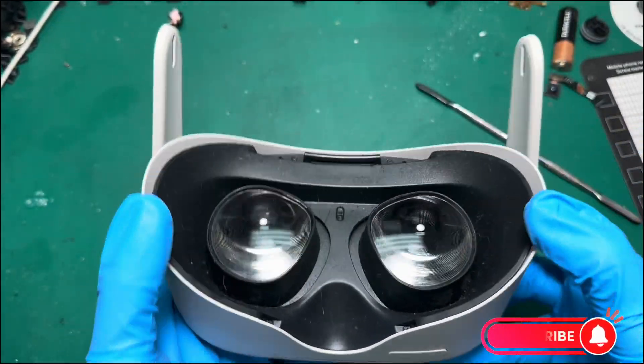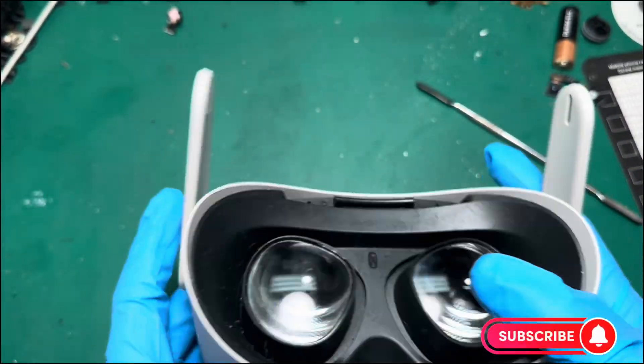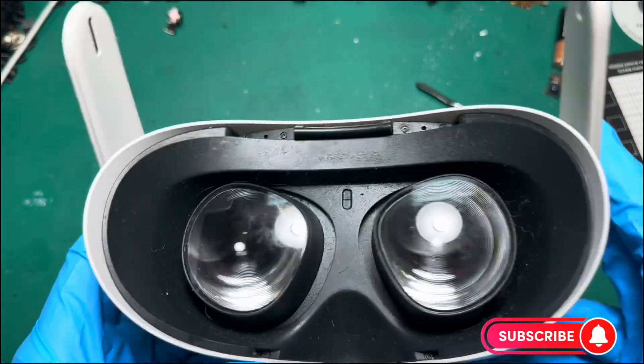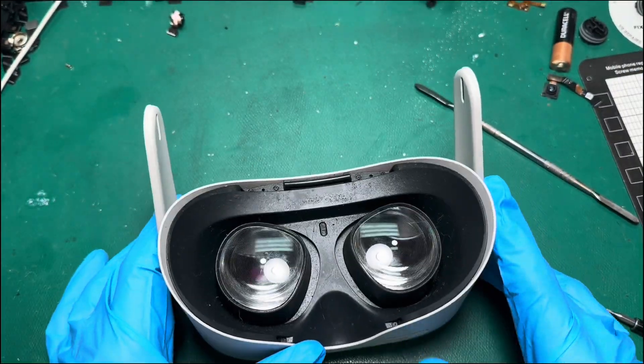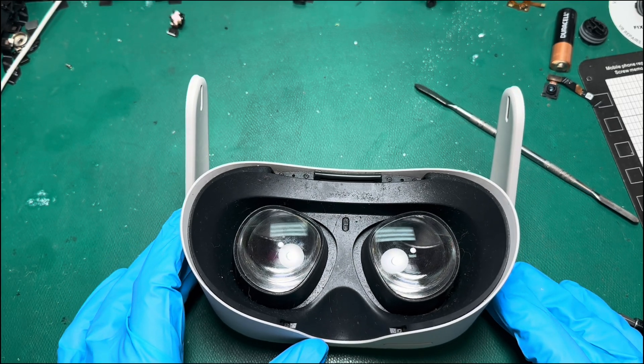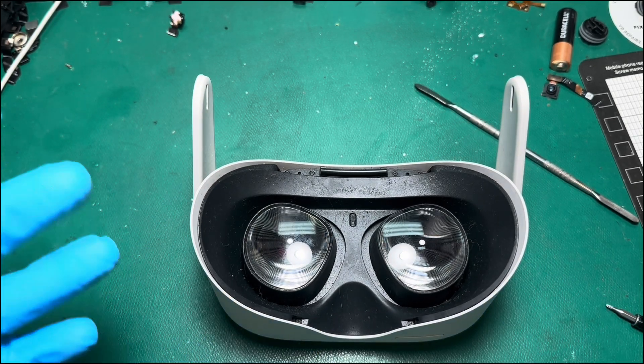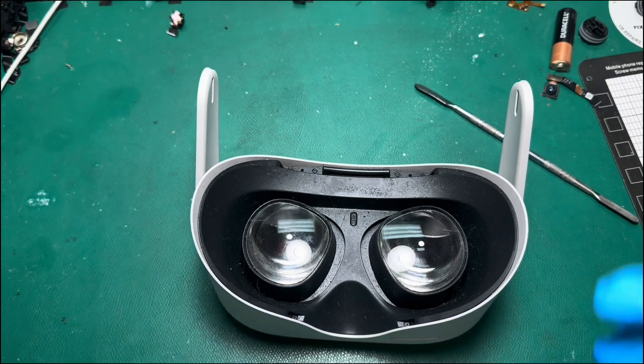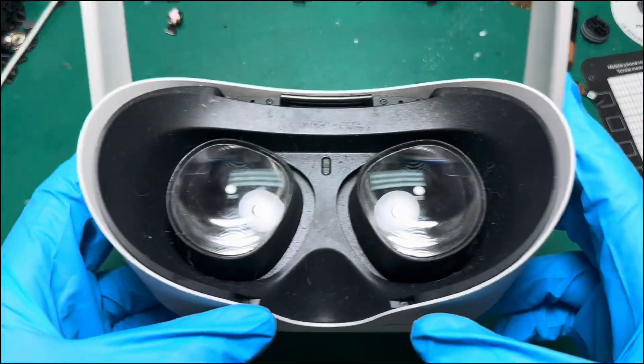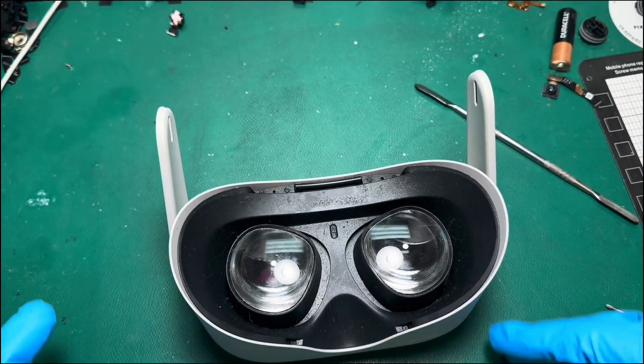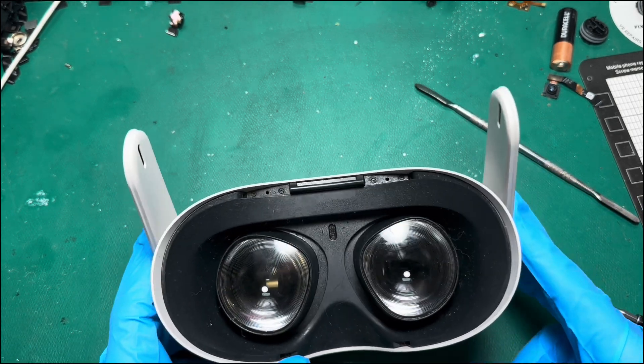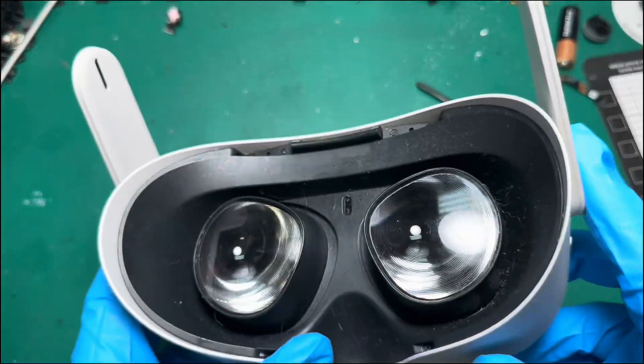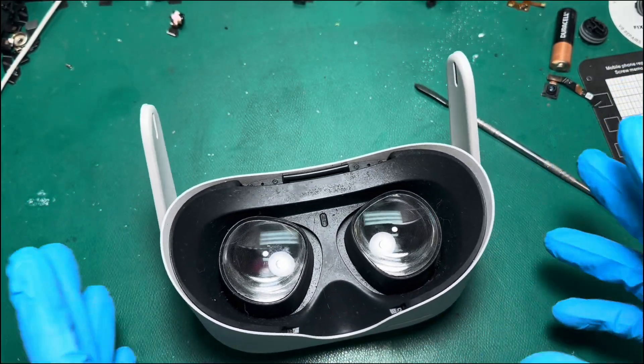Every so often, maybe once a quarter, somebody will send us in a headset that is so far beyond repair, not even I want to fix it. Most of the time, these are due to things like animal waste inside of the headset. And that can range from liquid waste to even things like cockroaches and bugs that have found their way inside the headset. It's not common, but it does happen.